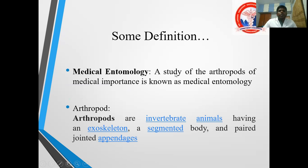So what is medical entomology? It is the study of arthropods of medical importance. What are arthropods? They are invertebrate animals having an exoskeleton. They don't have a vertebra but they have an exoskeleton. They have a segmented body and jointed appendages.